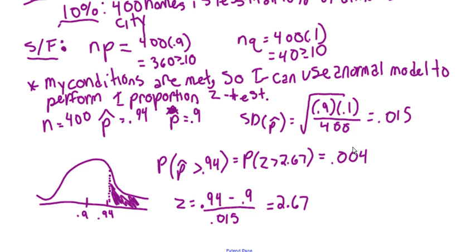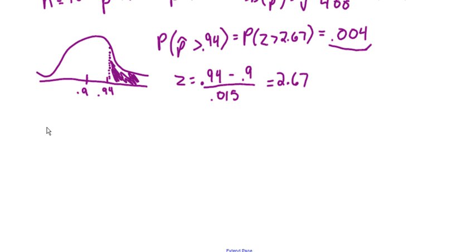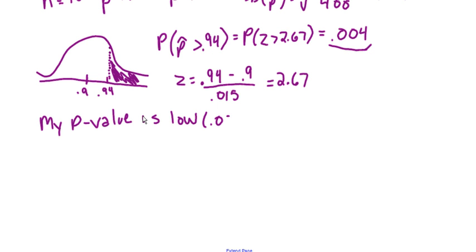We've been doing this since chapter 18 — comparing our population to our sample. This value, 0.004, is our p-value. What this says is: if the national rate truly were 90%, the probability that I would get a sample like I did is 0.004, or 0.4%. That's very unlikely — very unusual. So my p-value is low: 0.004.